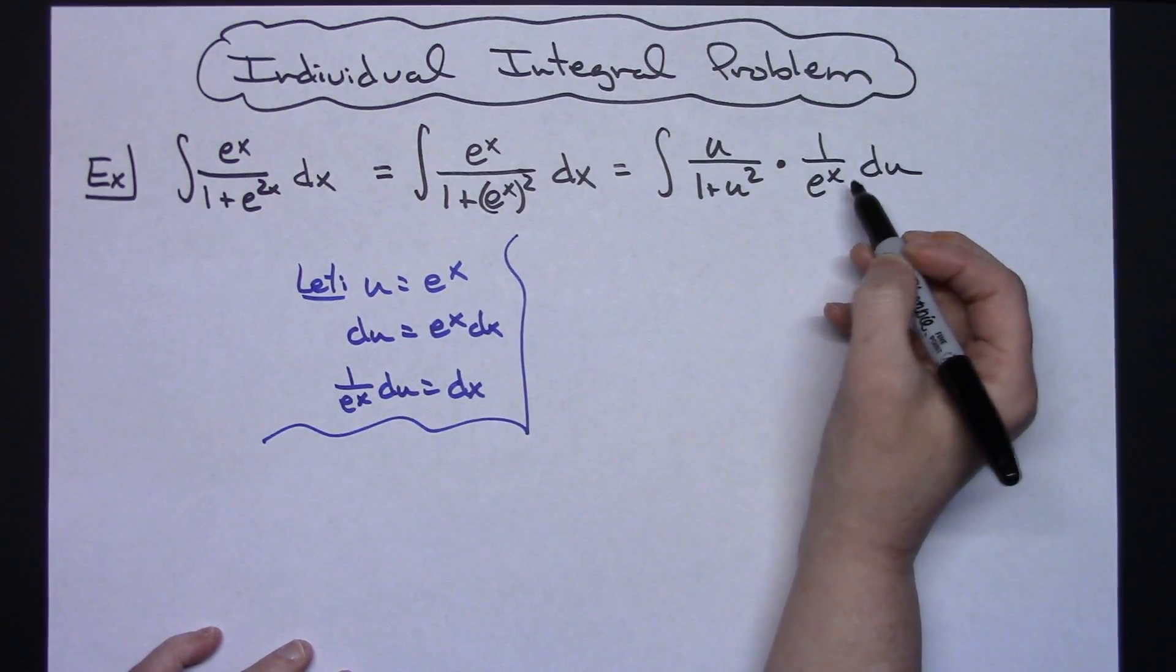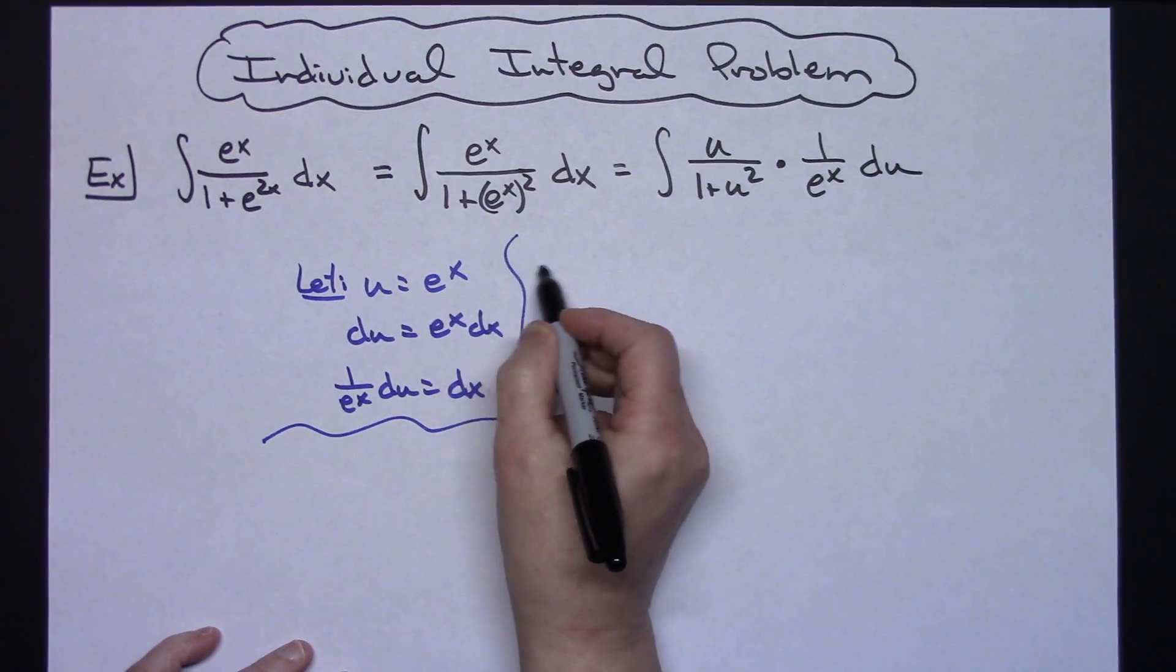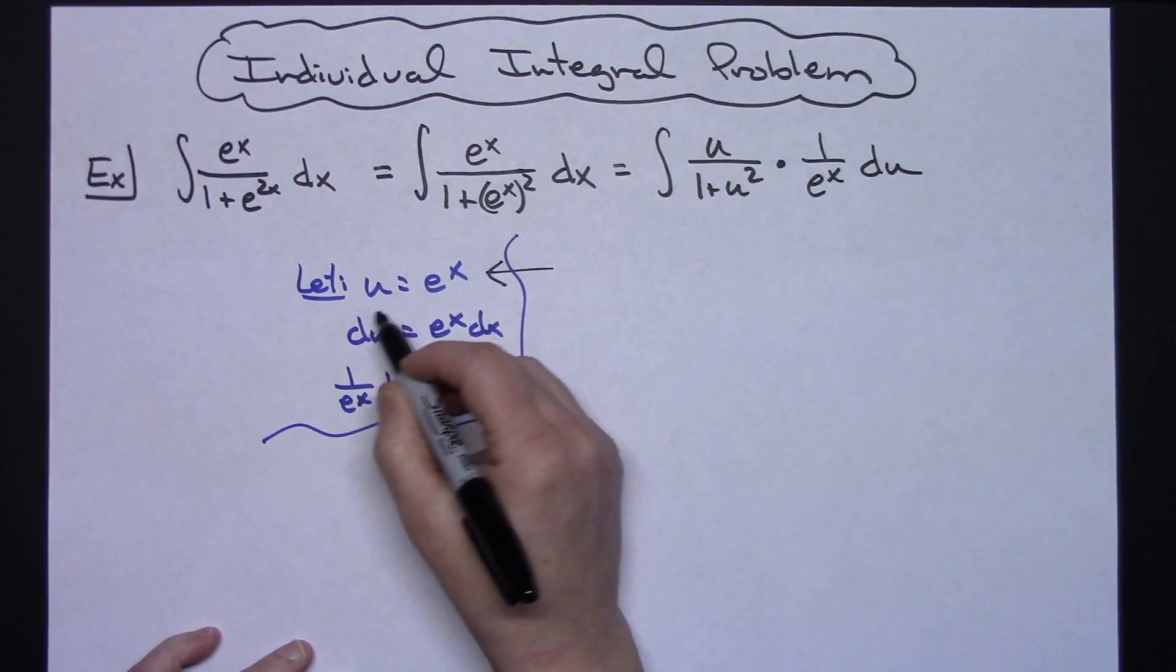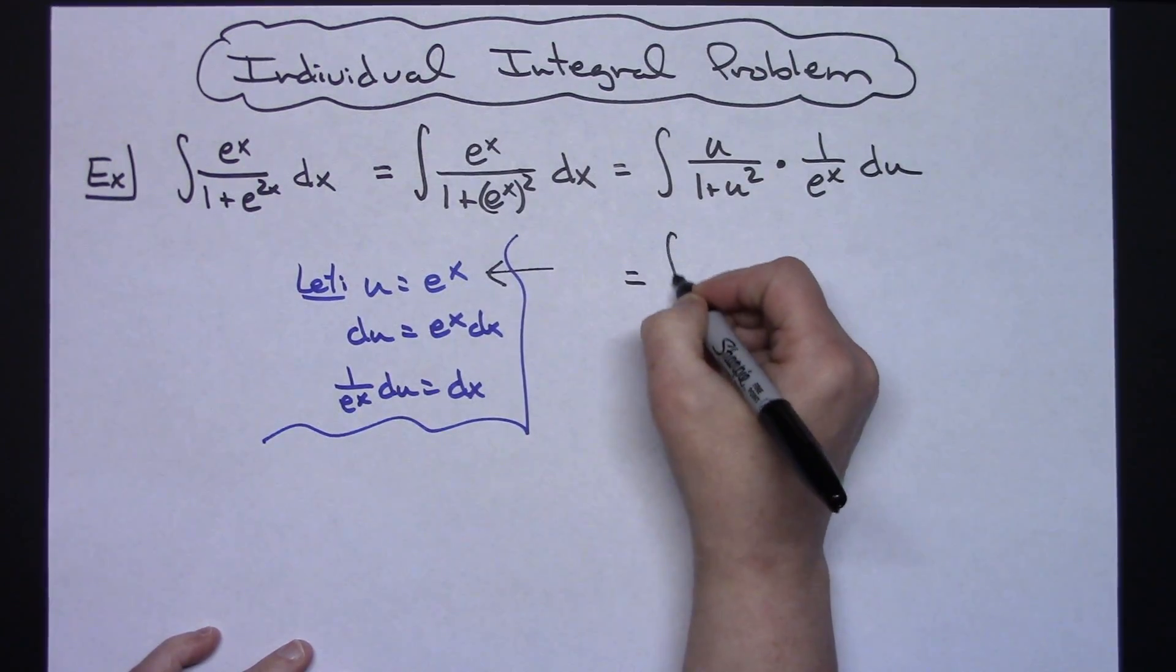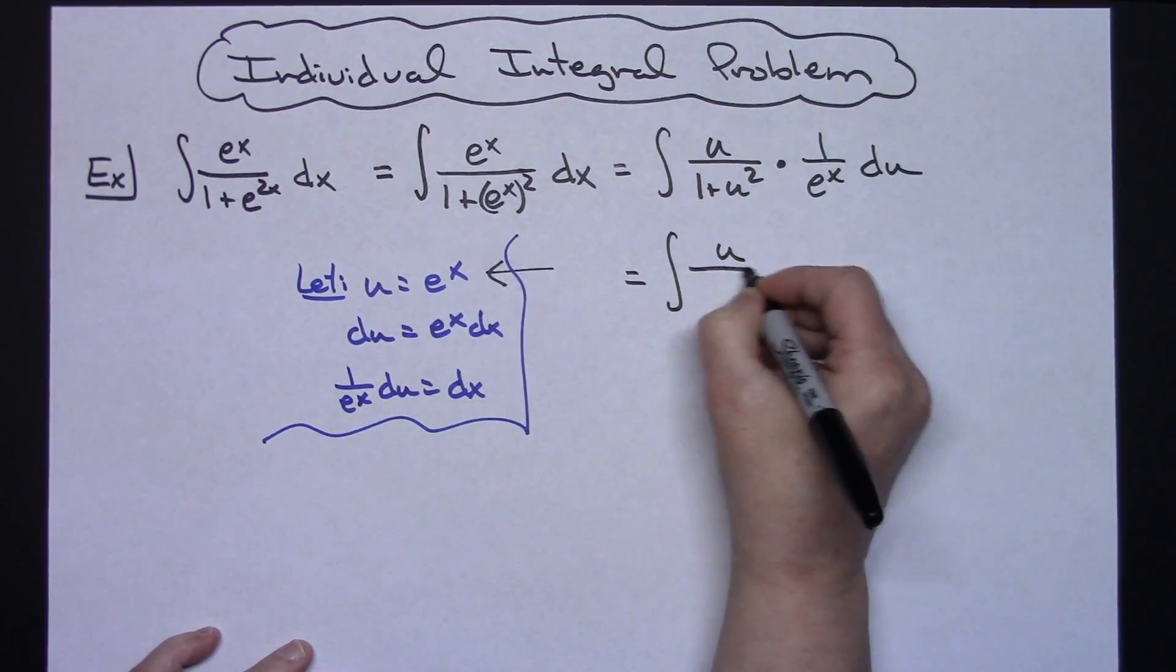I have an e to the x left over. Just keeping in mind there that e to the x we said was u, you might get that substitution there on that first step, and if not then just go ahead and do it on the second one.